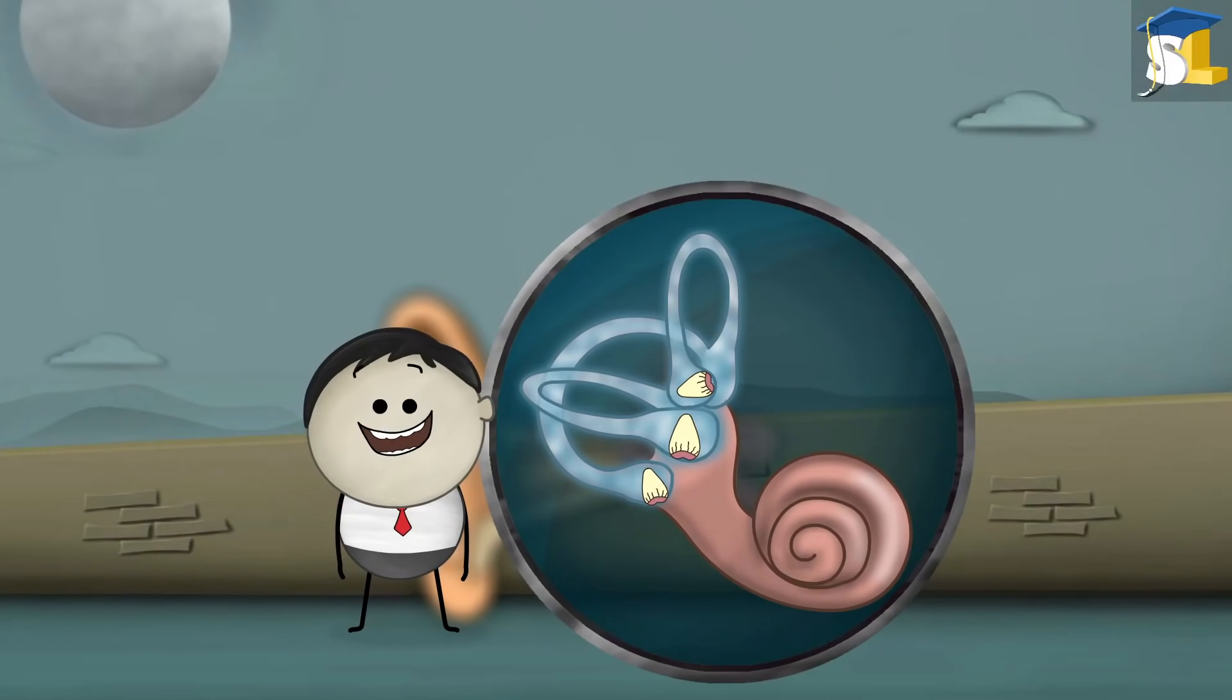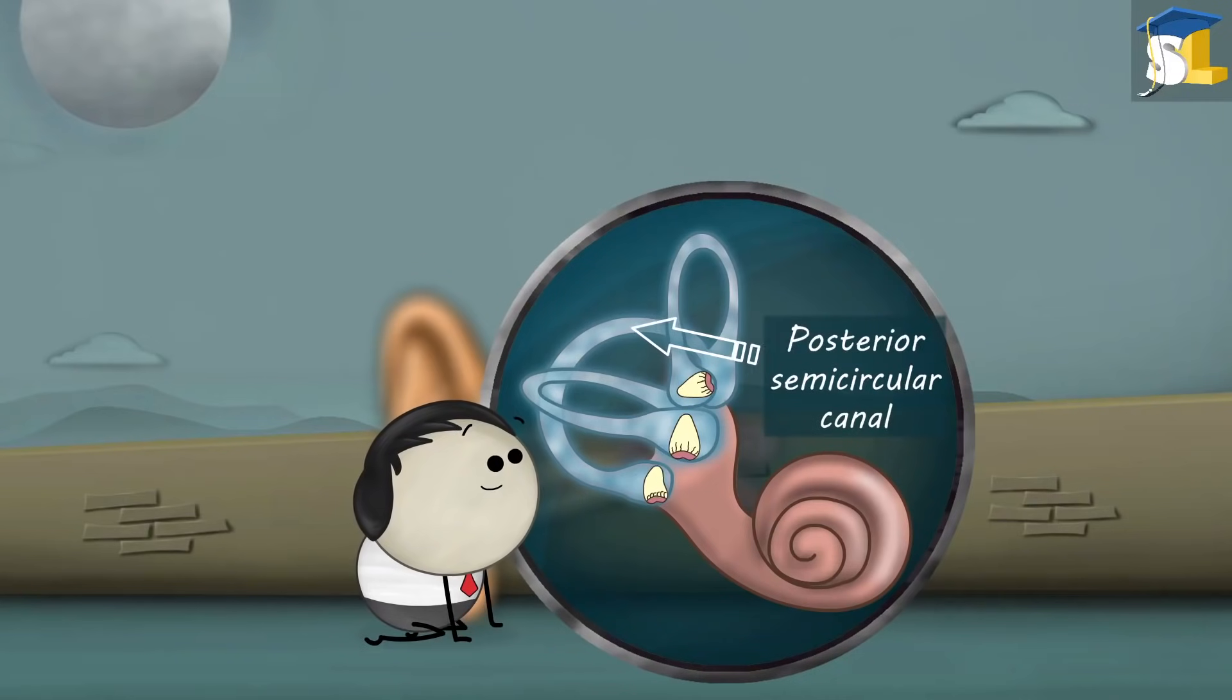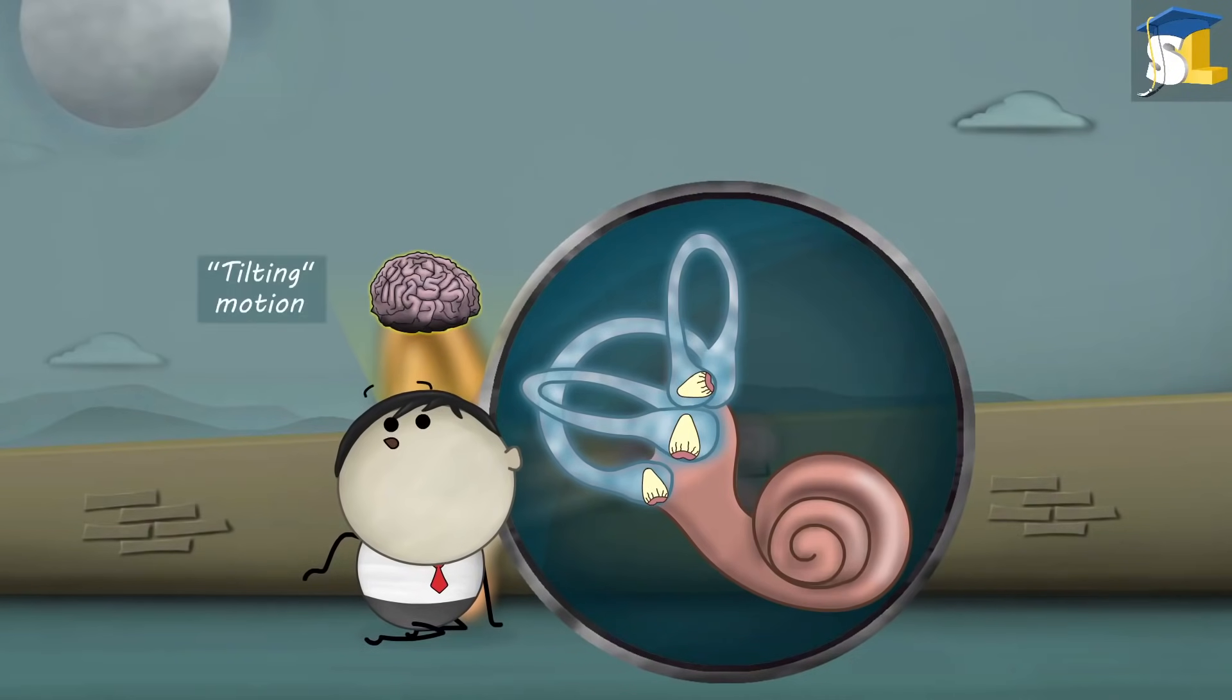When we tilt our head towards our shoulders, the posterior semicircular canal helps our brain to understand the tilting motion.